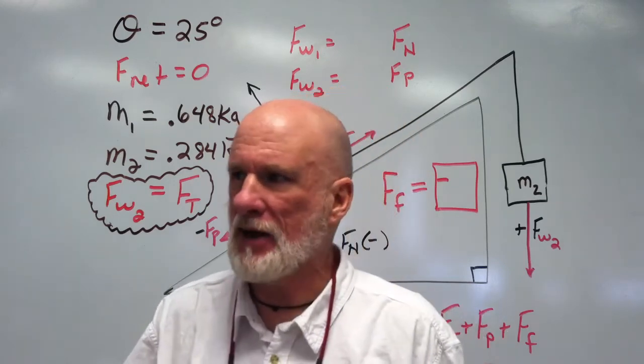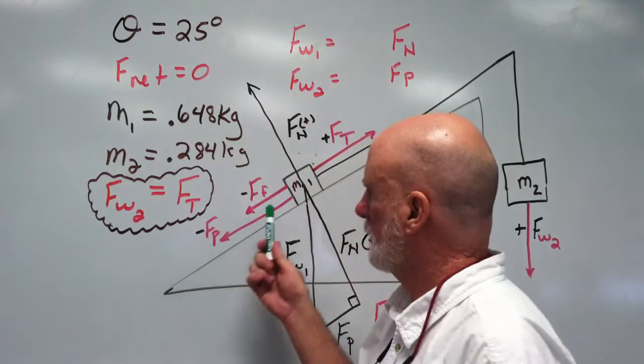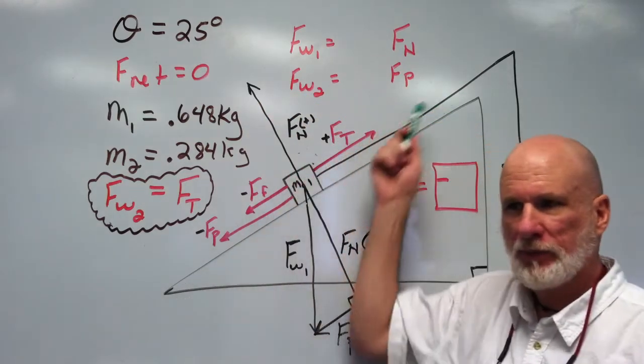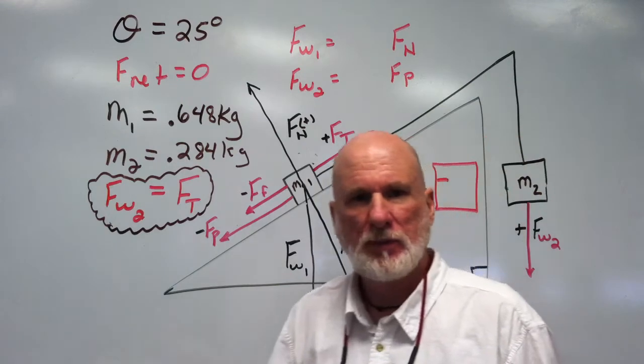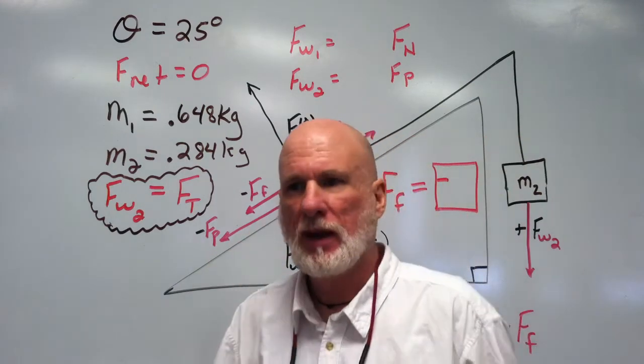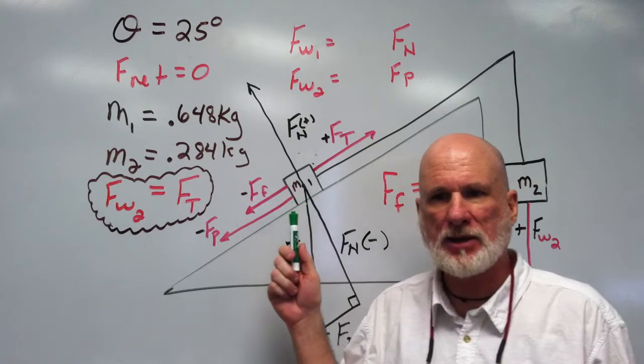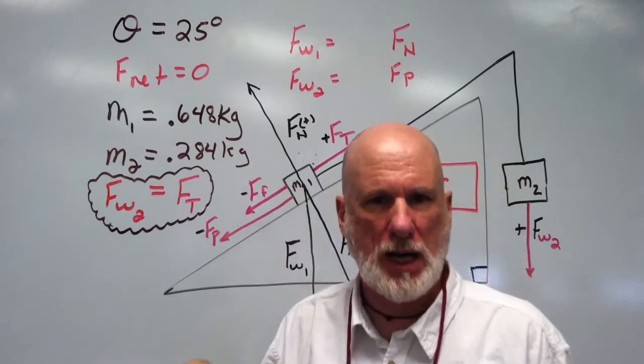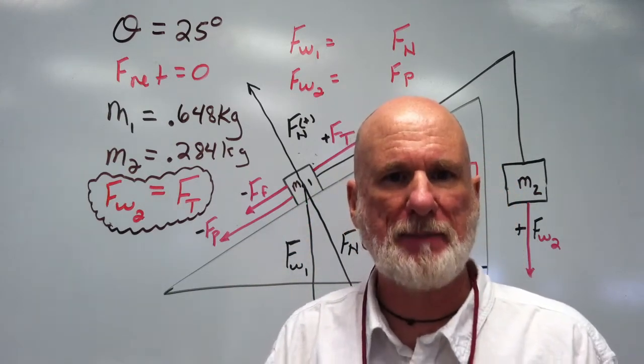So we have a ramp, and the ramp is two dimensions. And there's a cart on the ramp, and that cart is represented by mass one. The cart is represented by mass one.